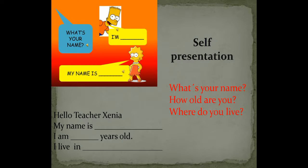Hello, teacher Zenia. My name is Alberto. I am six years old. I live in Bello Horizonte. This is an example of what you need to do. Ese es un ejemplo de lo que tú necesitas hacer.